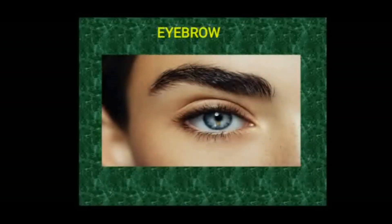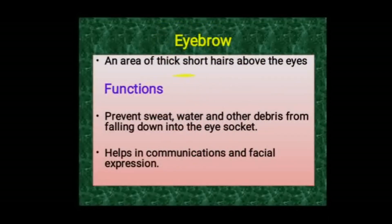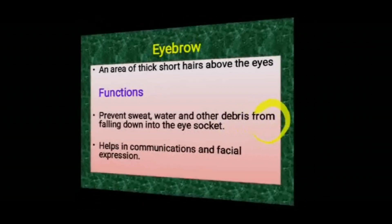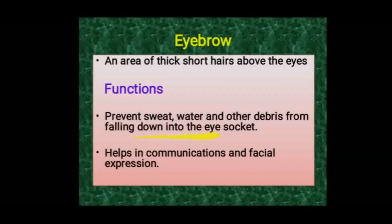Next is the eyebrow. Eyebrows are short hairs seen just above the eyes — an area of thick, short hairs above the eyes. Their major functions are to prevent sweat, water, and other debris such as dust particles and small foreign bodies from falling down into the eye socket. They also help in communication and various facial expressions.